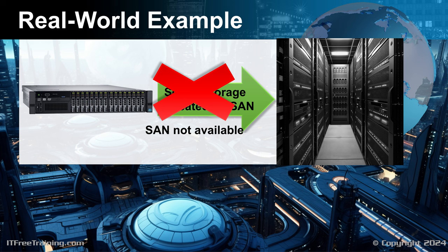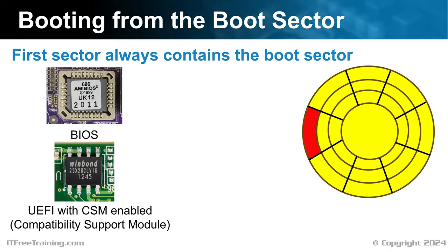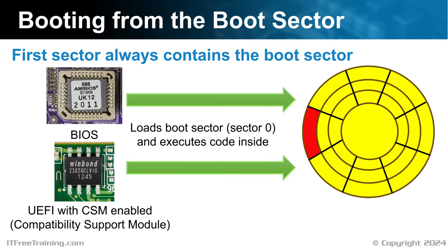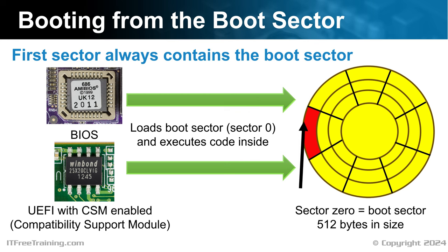Let's consider what happens when the computer tries to boot from a storage device. Computers use two methods for loading the operating system. The older approach involves reading the first sector of the hard disk, known as the boot sector. All BIOS systems supported this method. UEFI also supports booting from boot sector when Compatibility Support Module, or CSM, is enabled. CSM allows UEFI to work with older hardware, but may disable newer features like Secure Boot and Fast Boot. For compatibility reasons, the boot sector is set to 512 bytes, which constrains how much code can be stored and run from it.